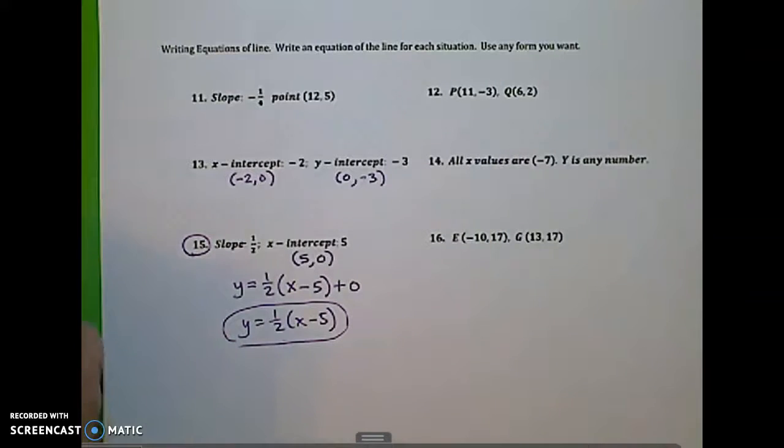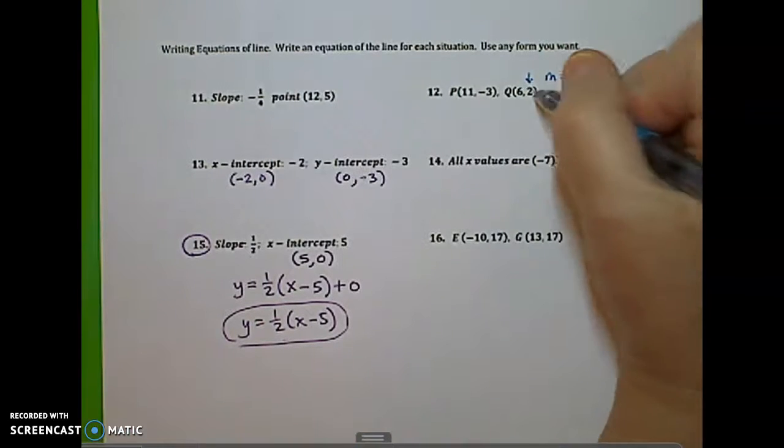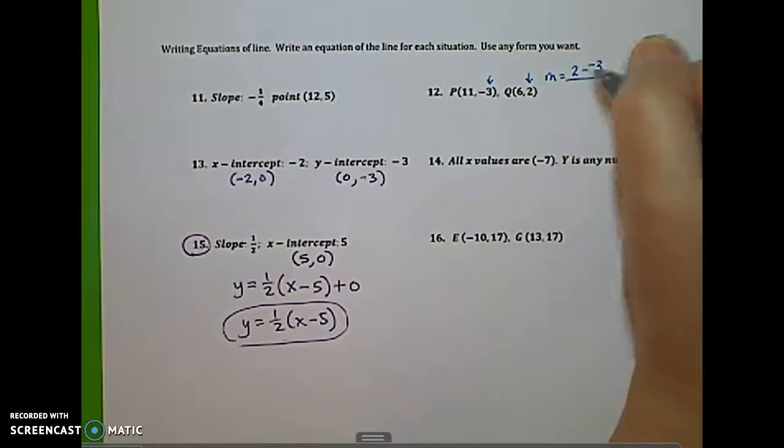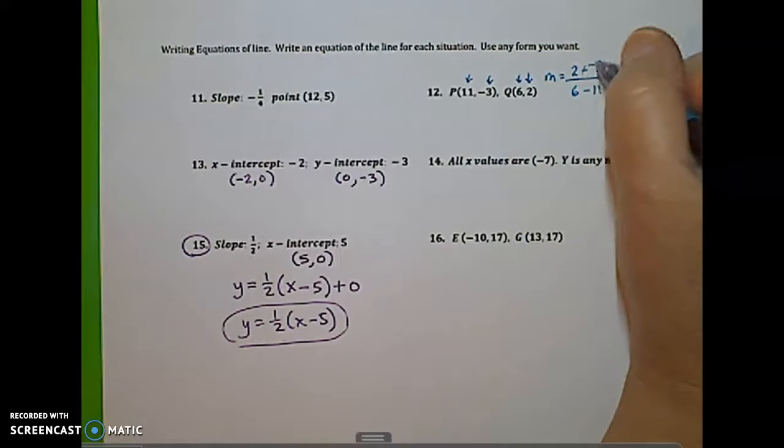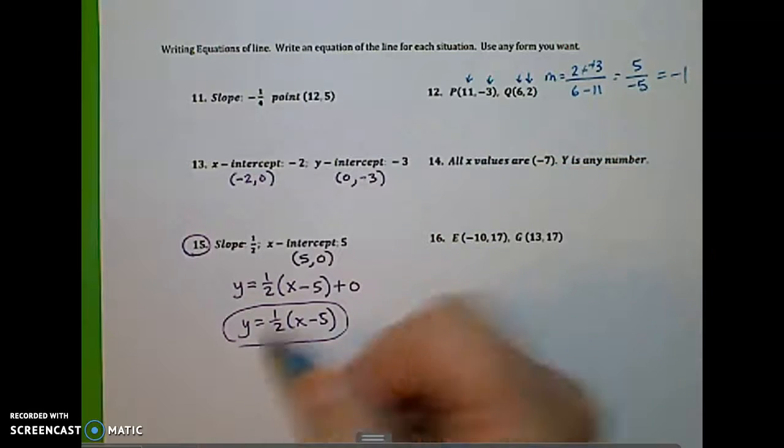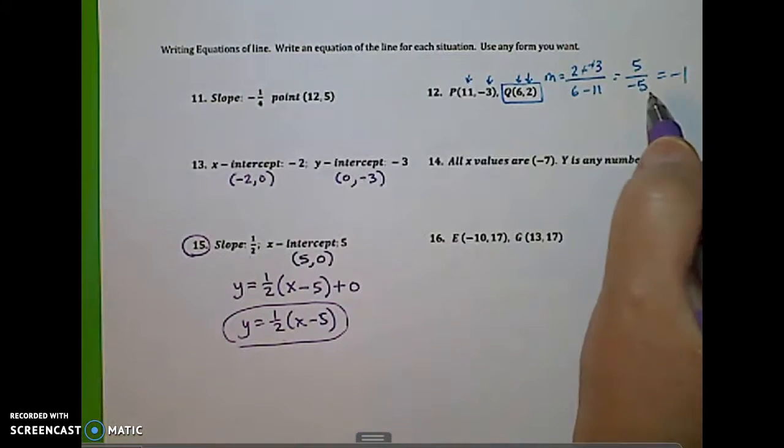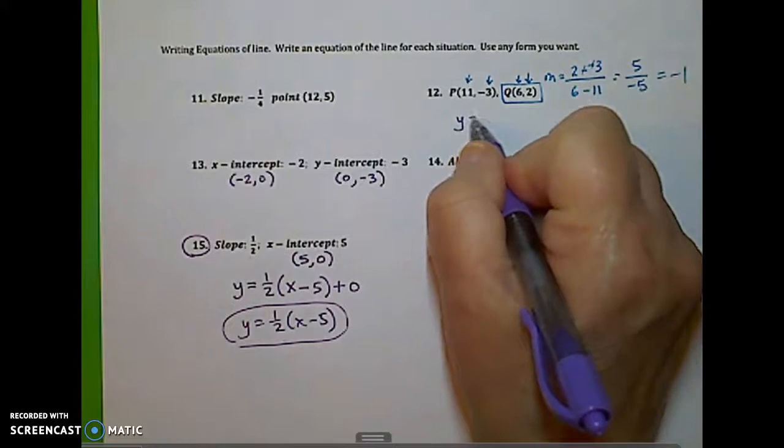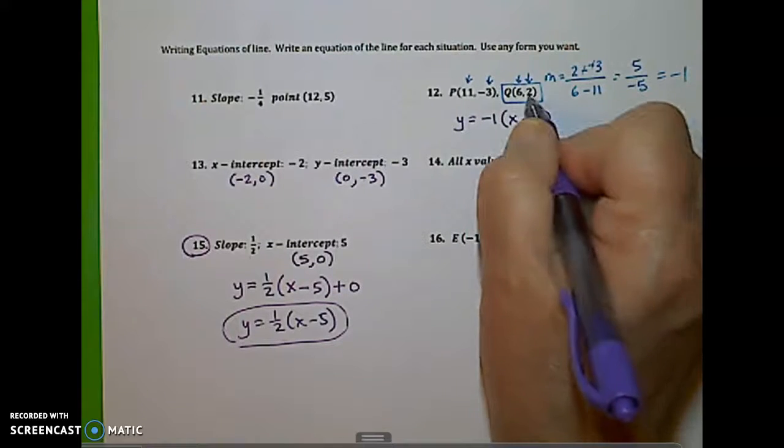Now let's do one where we have to calculate the slope. I'll do number 12. We've got to calculate the slope. So I'm going to do y2, which is 2, minus y1, negative 3, over x2, 6, minus x1, 11. So 2 minus negative 3 is positive 5. 6 minus 11 is negative 5. My slope is negative 1. Now I'm going to pick a point to use with this. I can actually pick either point that I want. I'm going to choose point q, because it's all positive numbers, and I'd rather use all positive numbers. You can actually use either one. So here we get y equals negative 1, my slope, times x minus the x-value, 6, plus the y-value, 2.